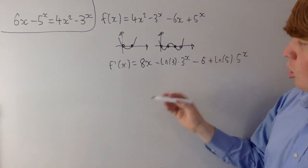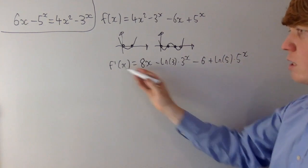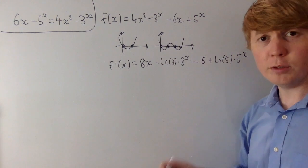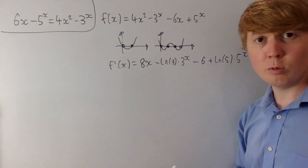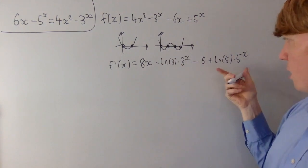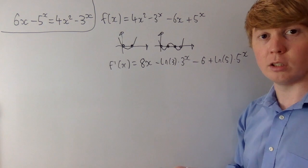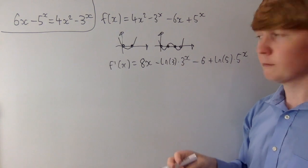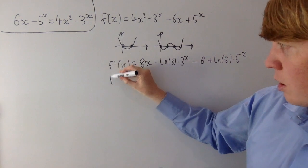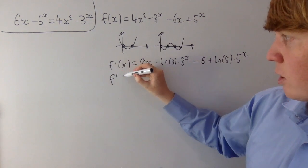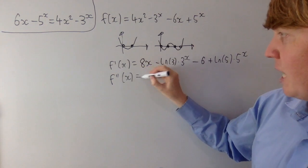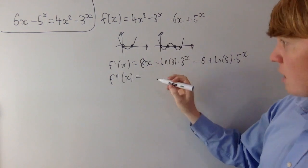So if you wanted to find all of the turning points, you'd set this equal to 0. But unfortunately, that's probably not going to be very helpful because solving this is about as difficult as solving the original equation. So what we could do instead is look at the second derivative, because this still contains a lot of information about what our graph will look like.